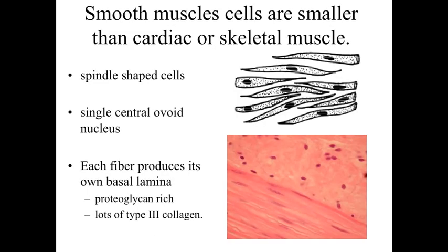The third muscle type — after skeletal and cardiac — is smooth muscle. Smooth muscle cells are much, much smaller than both cardiac and skeletal muscle. They are spindle-shaped cells with an enlarged center tapering down into very thin regions towards the periphery, looking almost like a little spindle.